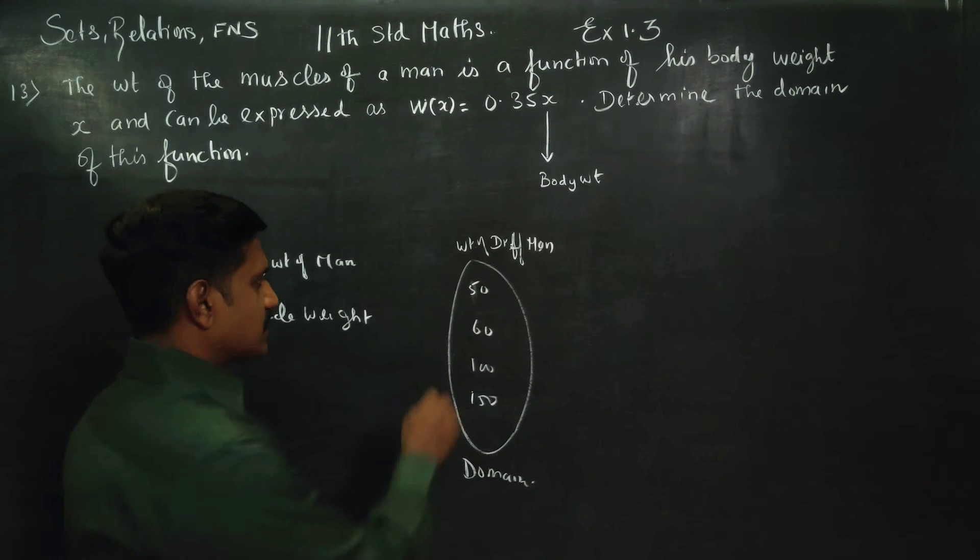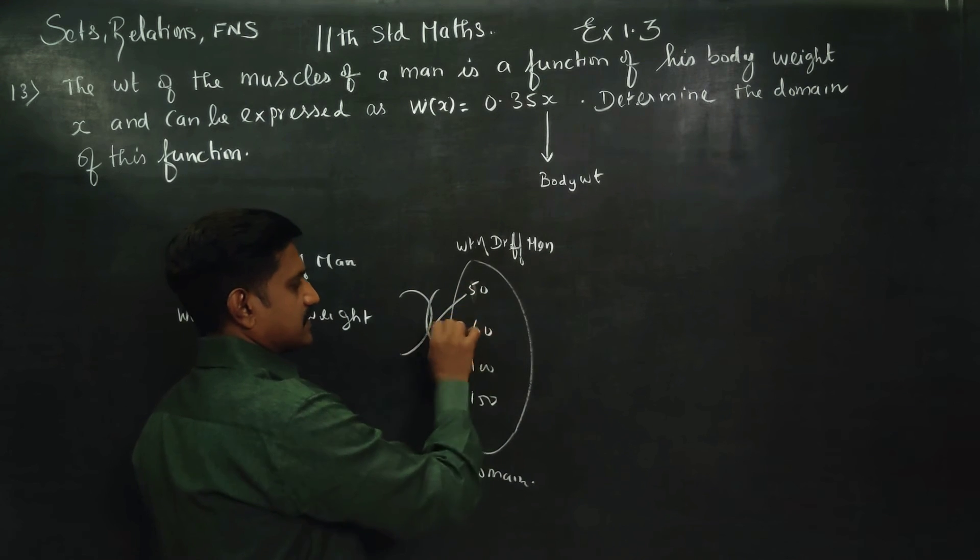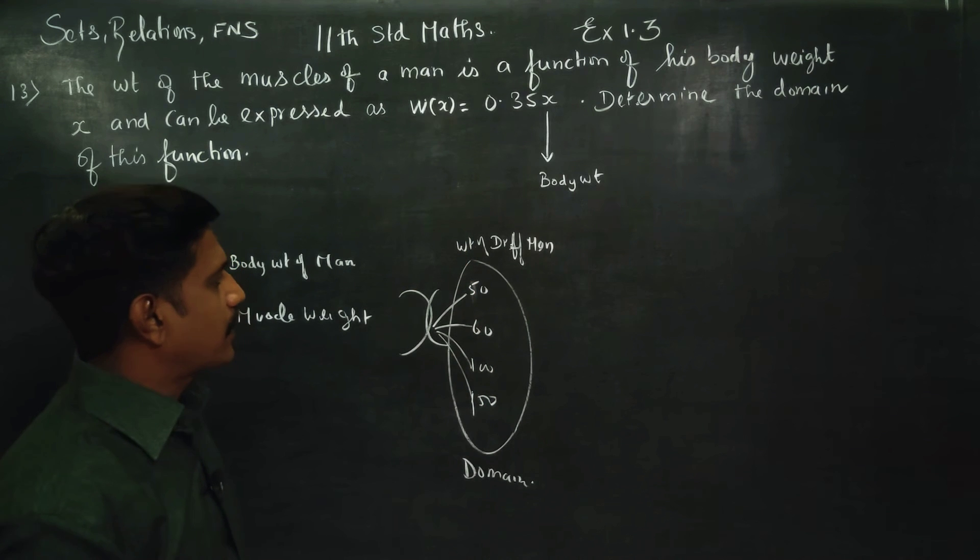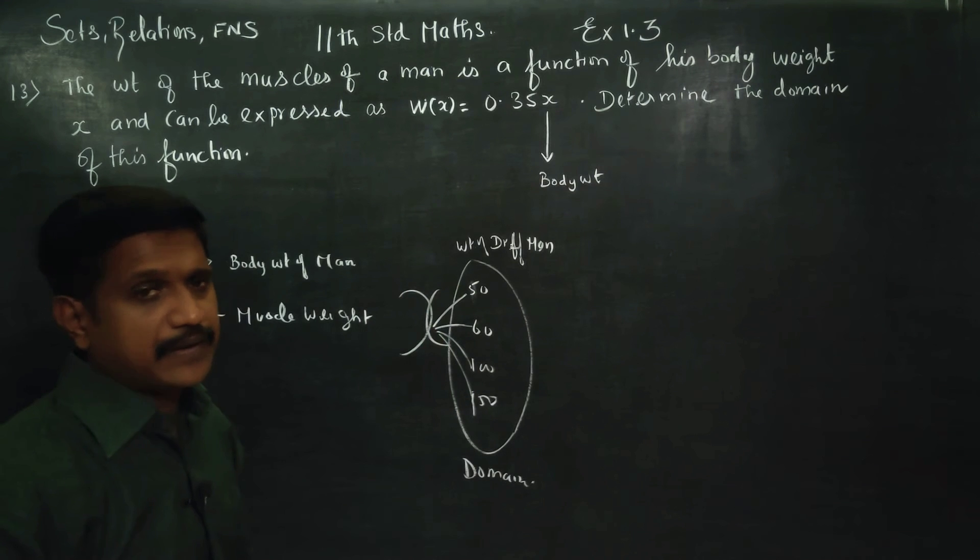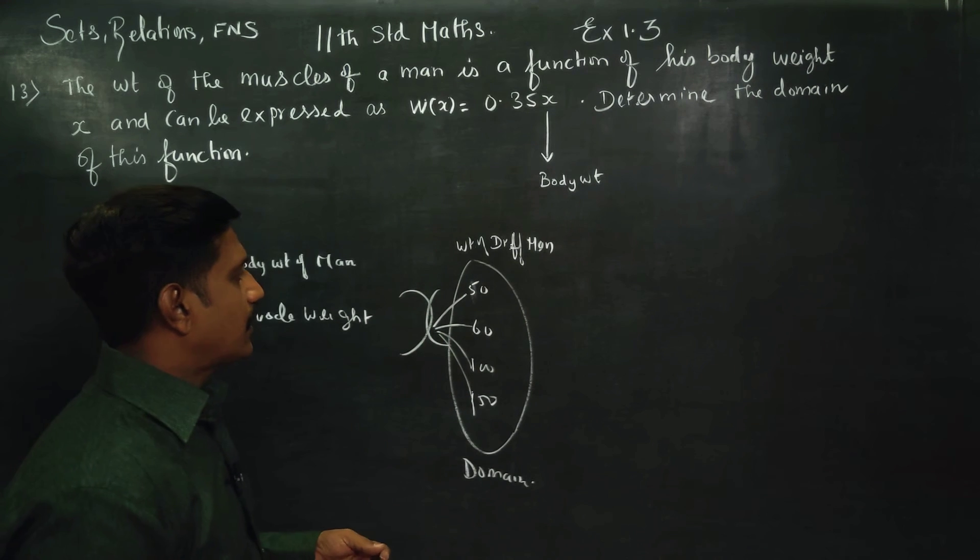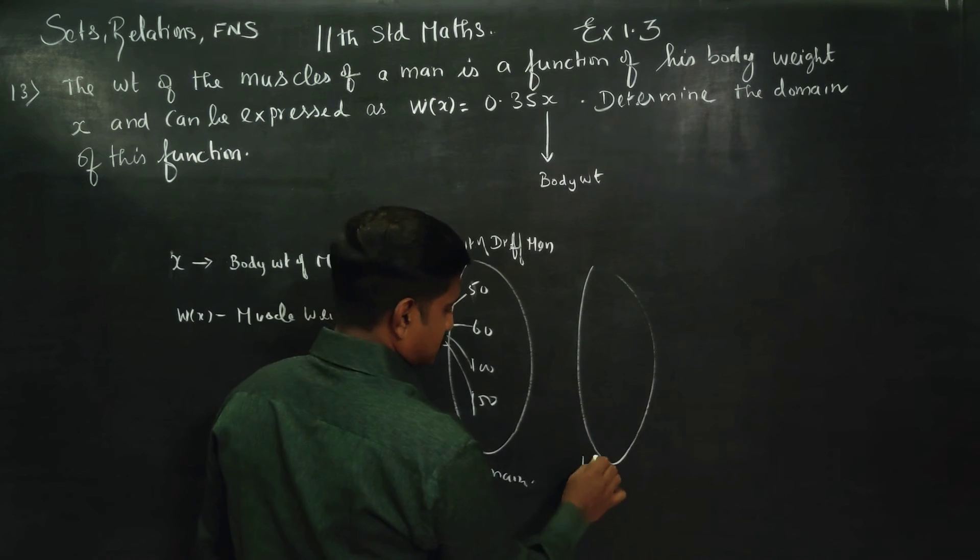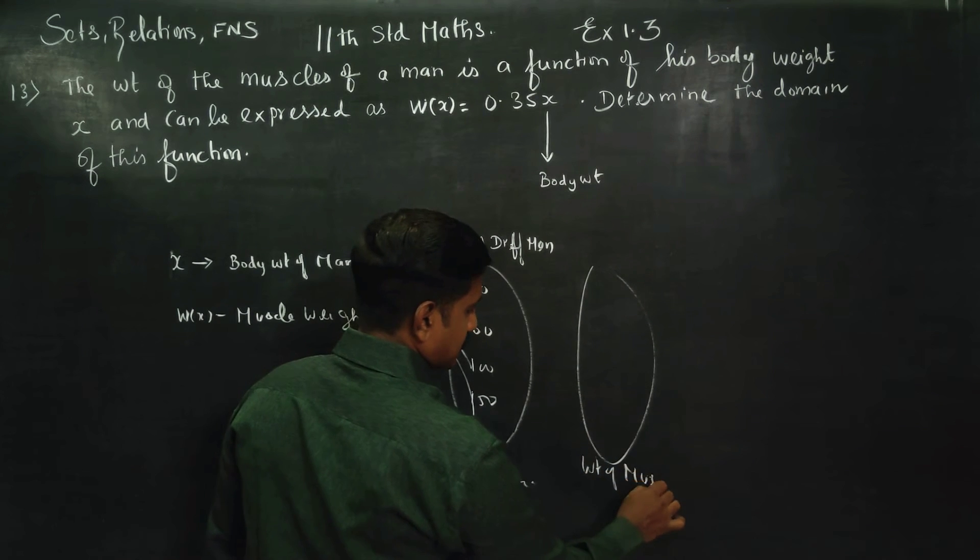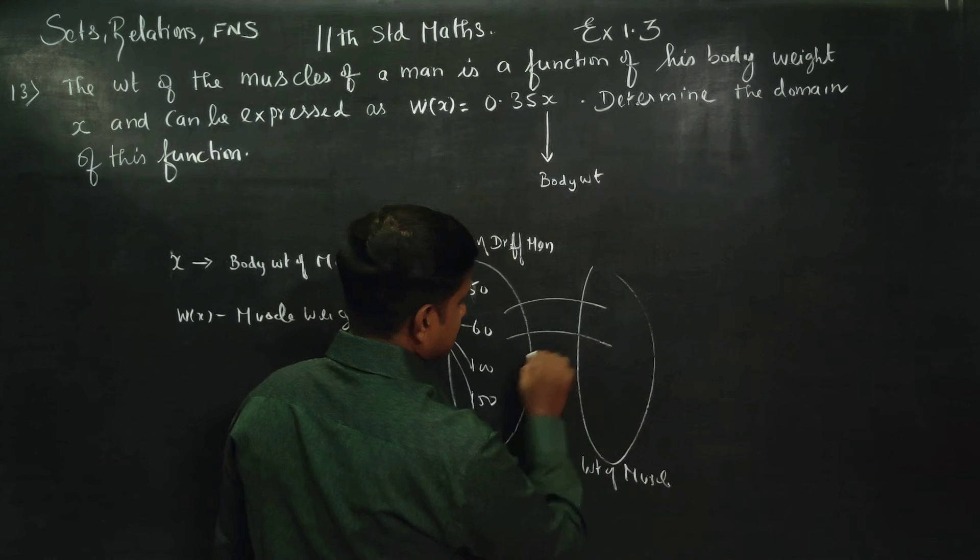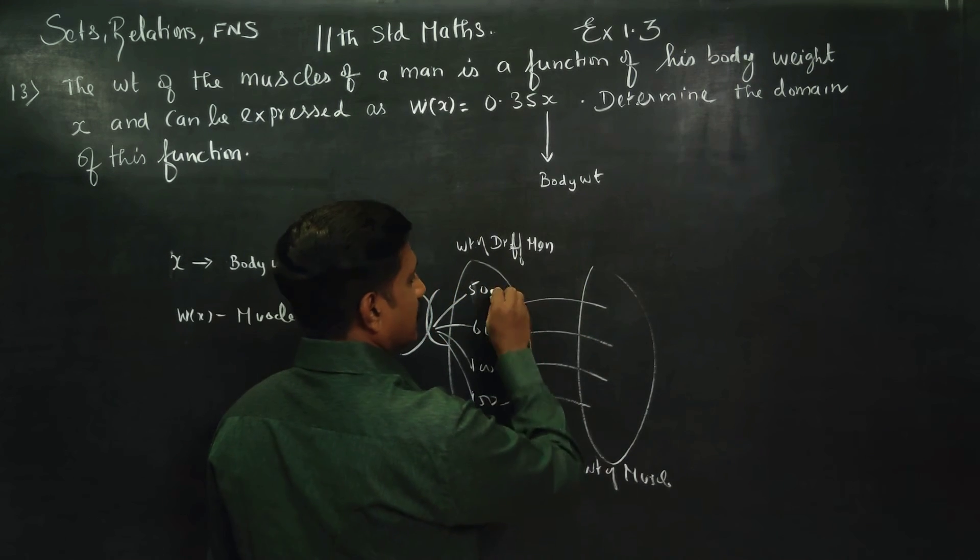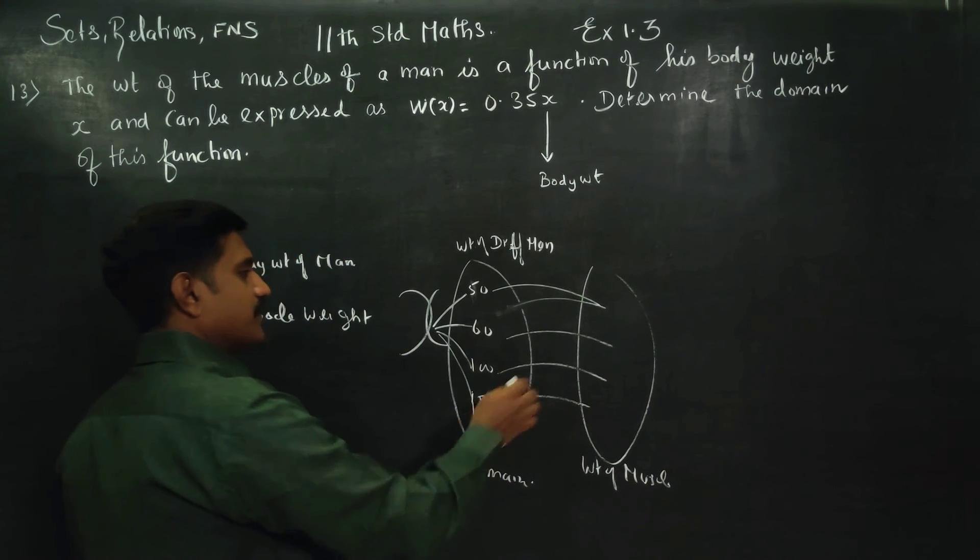We are posting these different x. I am 50, I am 51, I am 60, I am 61. The domain is weights of muscle, muscle weights.